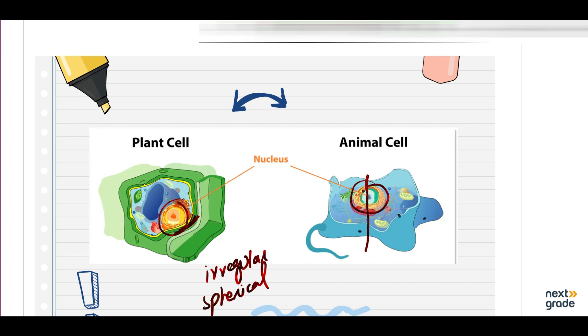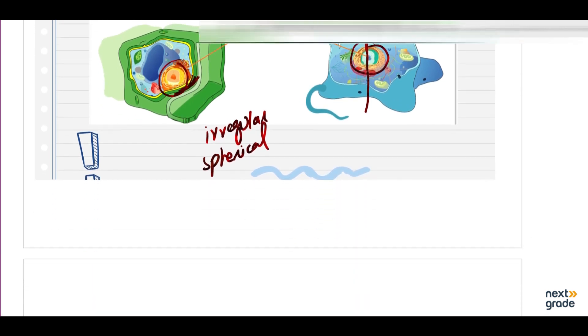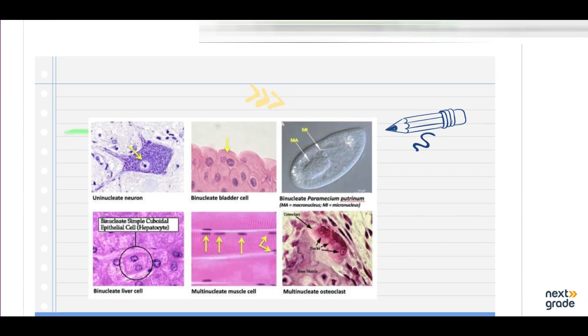Generally, those cells that contain one nucleus, which contain only one nucleus, we call uninucleate or mononucleate.